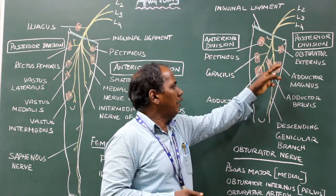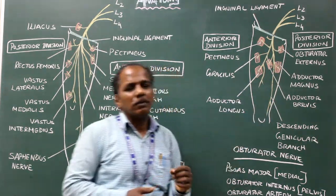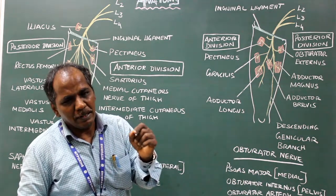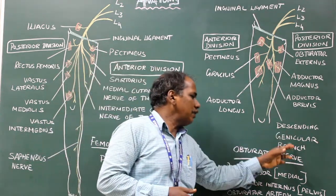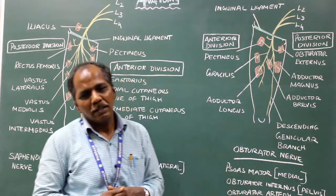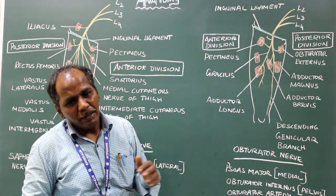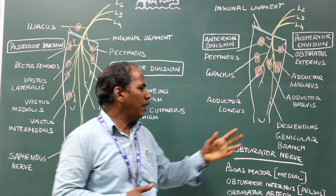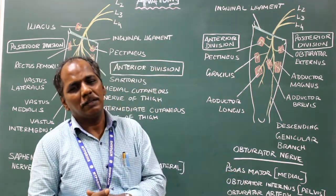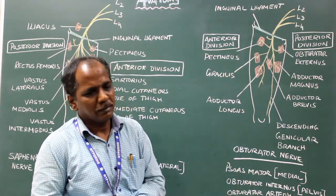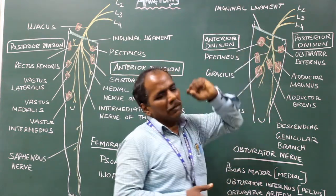From the posterior division there is a branch known as the descending genicular branch. It passes to the popliteal fossa where it ends by supplying the knee joint. It also gives an articular branch to the hip joint.